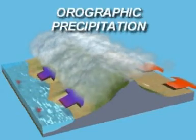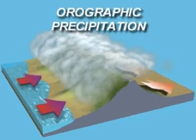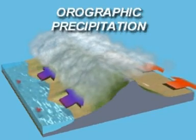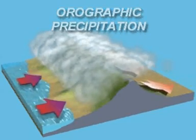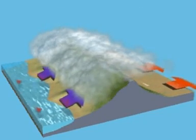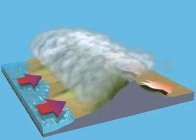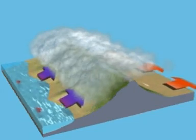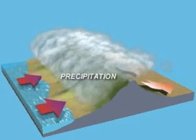Orographic means related to mountains. In orographic precipitation, winds move air up and over a mountain barrier. The forced ascent of warm moist air over a mountain barrier produces precipitation.